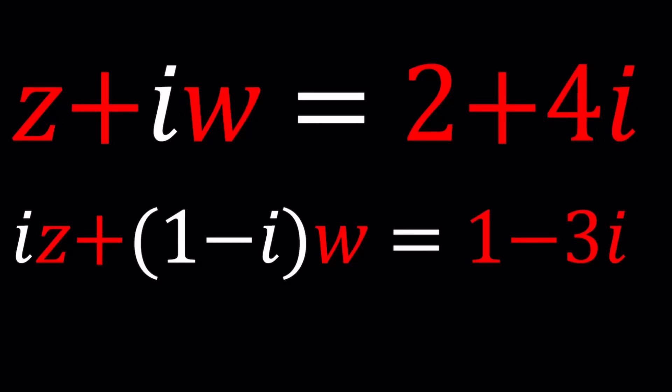Hello everyone, welcome to A plus PI. This channel is all about complex numbers and in this video we're going to be solving a system of equations with complex coefficients. We have Z plus IW equals 2 plus 4I and IZ plus 1 minus I times W equals 1 minus 3I, and we're going to be solving for Z and W which are complex numbers.